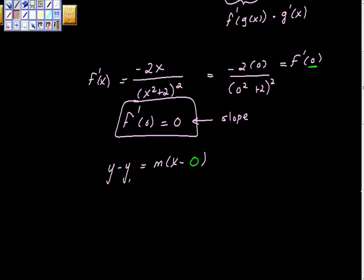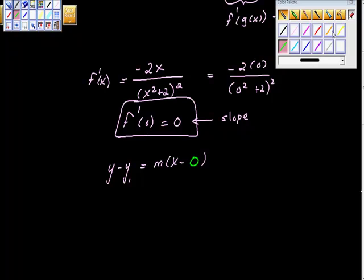We know that we found the derivative here, and the derivative here was, sorry, the slope here was 0, so that's this 0 right here. Now the question is, what's this y₁ value?